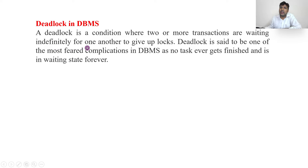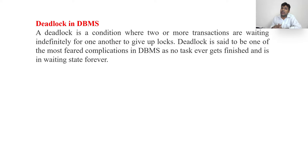For example, there are transactions T1, T2, and T3. T1 is waiting for T2, T2 is waiting for T3, and T3 is waiting for T1. Now they are waiting for one another indefinitely — they are in a standstill. Neither they can cancel their waiting nor can they proceed further.